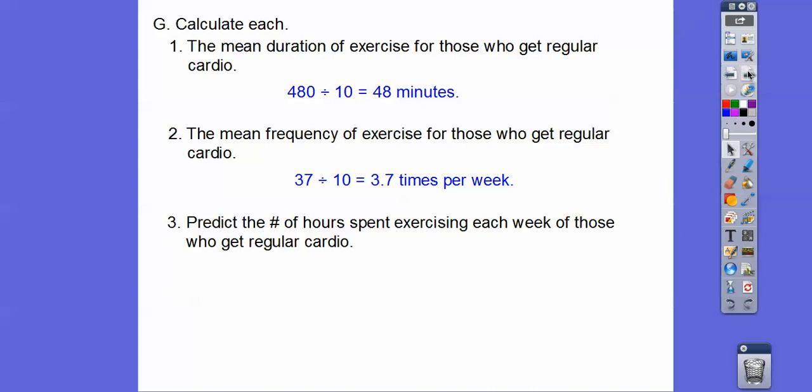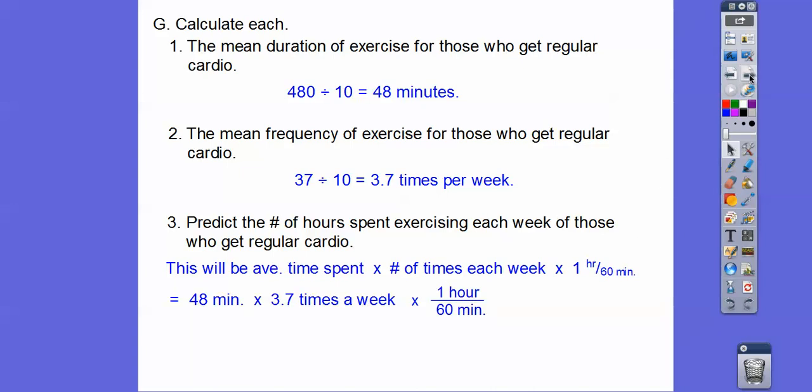So now use that to predict the number of hours spent exercising each week of those who get regular cardio. So what we're going to do now is this is going to be the average time spent times the number of times each week. And then we want to know, change that to hours. It says the number of hours. So at the end, we multiply it by one hour per 60 minutes right there. So we just divide it by 60 to get us in hours right there. So this will get us all an hour. So it's 48 minutes. That's the average time of these cardio people. And the average amount of times they do it is 3.7. So 48 times 3.7. And don't forget, divide it by 60 because then these minutes will cancel right there. And we'd be left in hours. So number of times per week, hours a week right there.